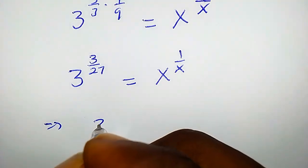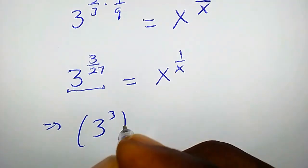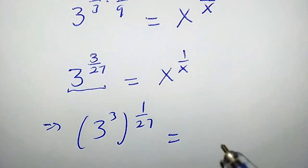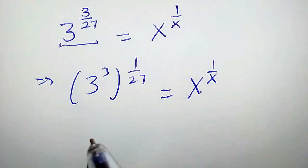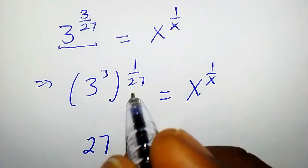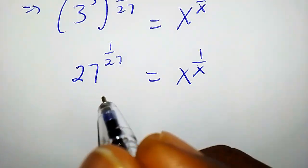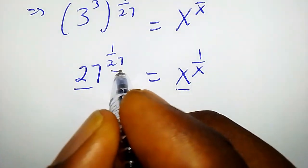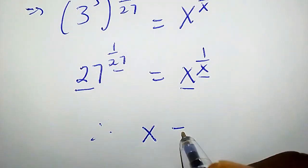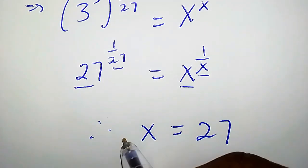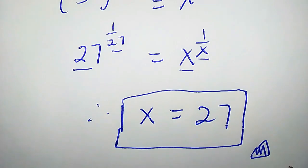This left hand side is the same thing as 3 raised to the power of 3 times 1 over 27 equals to x to the power of 1 over x. If we compare the bases and the powers together, therefore x is equal to 27. So this is the required solution for this exponential equation. Thanks for watching.